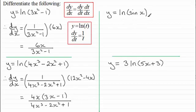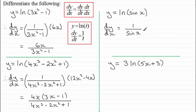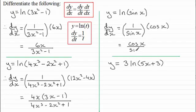Now let's try a trigonometric one: y equals the natural log of sin x. Differentiating by the chain rule, letting t equal sin x, dy/dt is 1 over t — so 1 over sin x — multiplied by the differential of sin x, which is cos x. Multiplying out you get cos x over sin x. You could leave it like that, but some of you might recognise that cos x over sin x is often called cotangent x, or cot x for short.